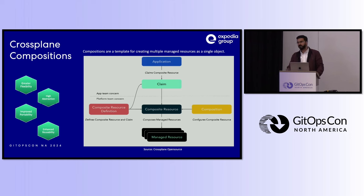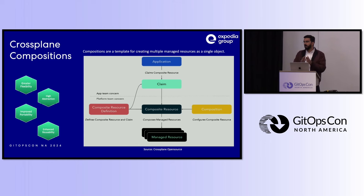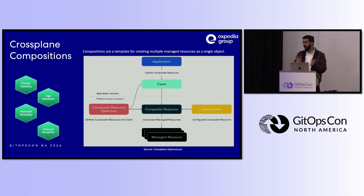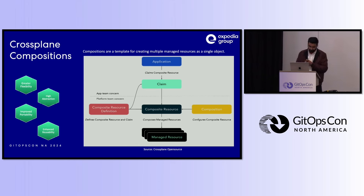What CrossPlane composition addresses is the friction that previously existed: developers still had to ask the CrossPlane API for resources like an S3 bucket, providing all configuration — policy, policy role, attachments — and platform engineers had to do a lot of manual management. CrossPlane composition provides namespace isolation in a multi-tenant Kubernetes environment, making it the way to go for multi-tenancy deployments.